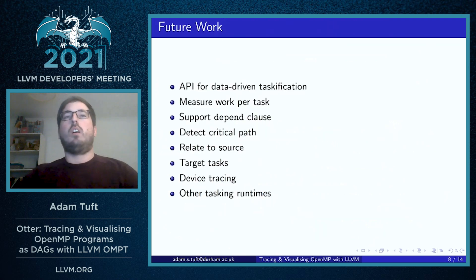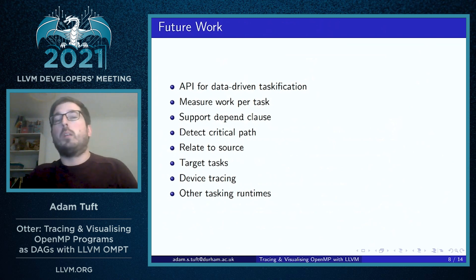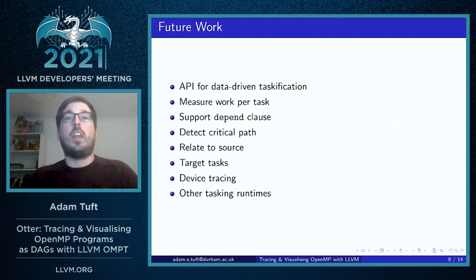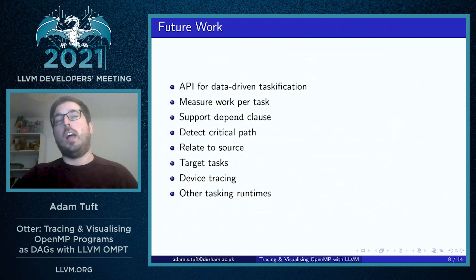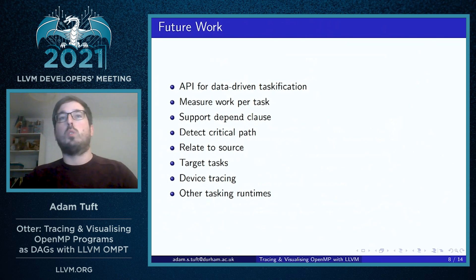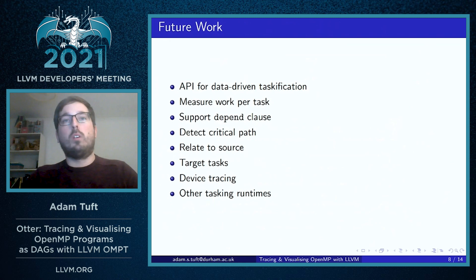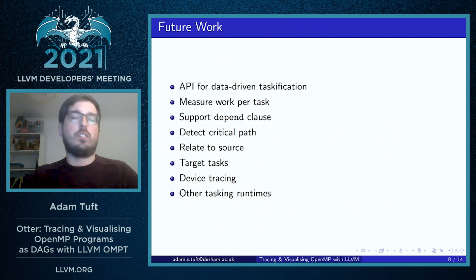In terms of future work for Otter, one of the main things we want to do is to extend its applicability. We are currently working on developing an API to enable data-driven taskification of existing serial code, so rather than tracing code that already has OpenMP tasks added, the intention would be to work from the beginning to collect data on the performance of a serial program and explore where the addition of tasks would benefit the overall performance.